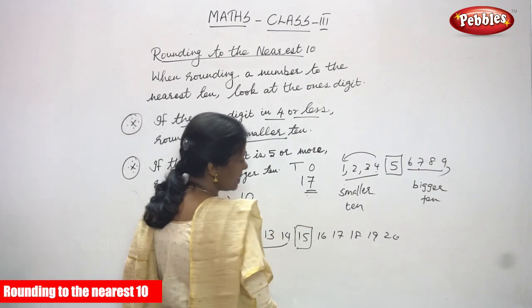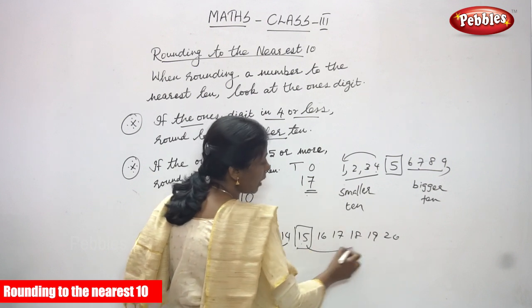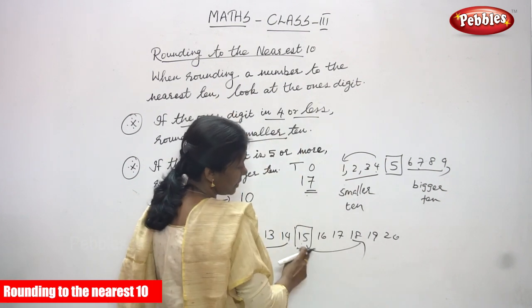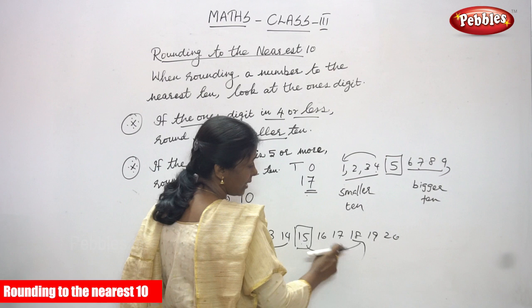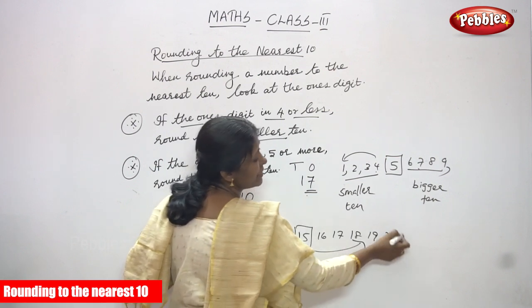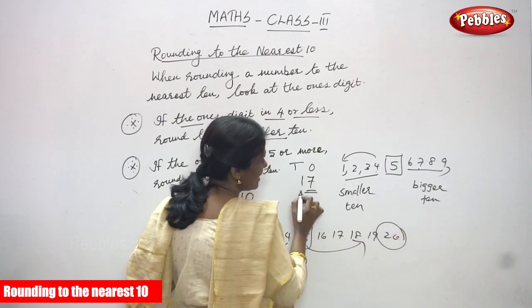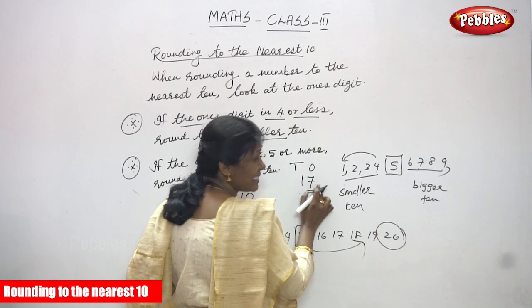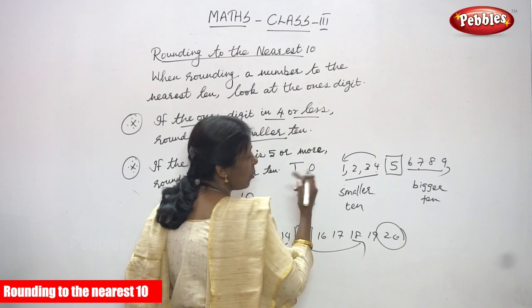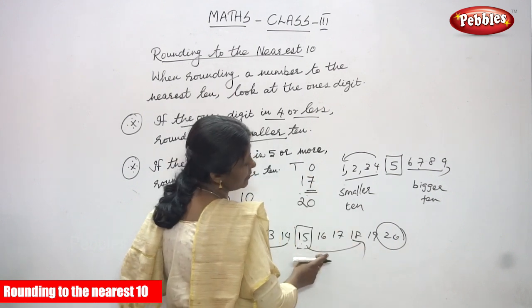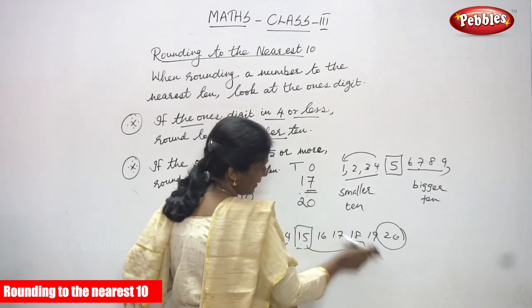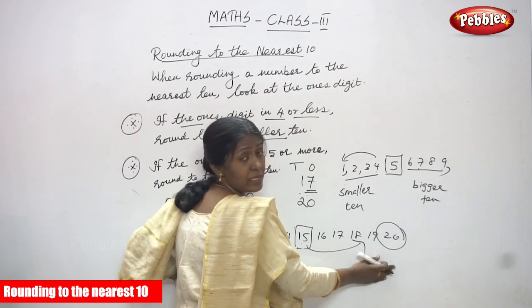Suppose the number is 17. The ones digit is 7, which is 5 or more. So you round to the nearest 10 — and since 5 or more means the nearest bigger 10, the answer is 20. So 17 rounded to the nearest 10 is 20, because the ones digit is 5 or more.